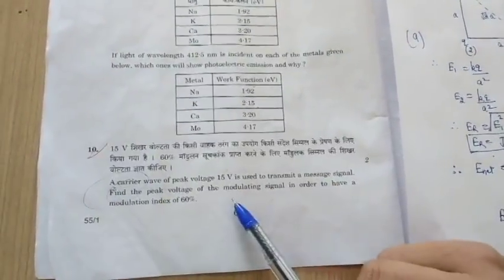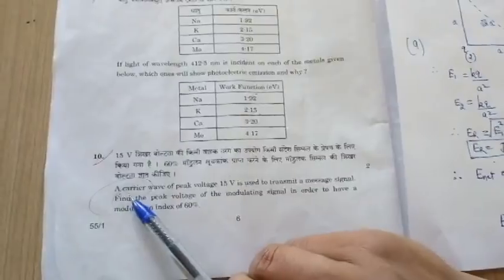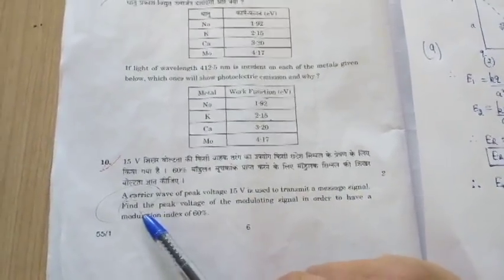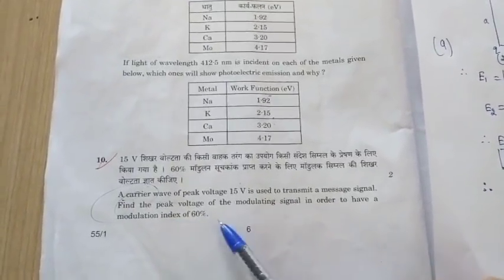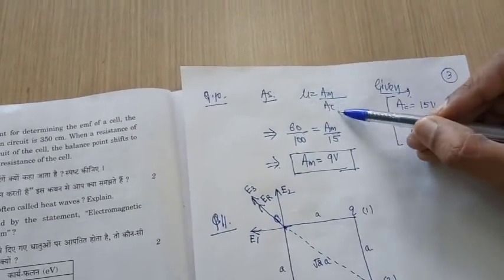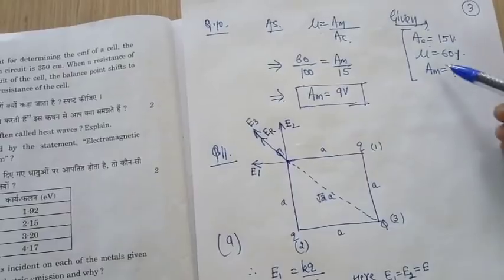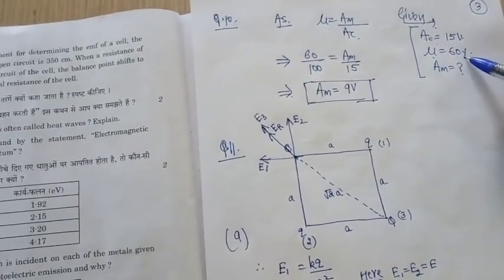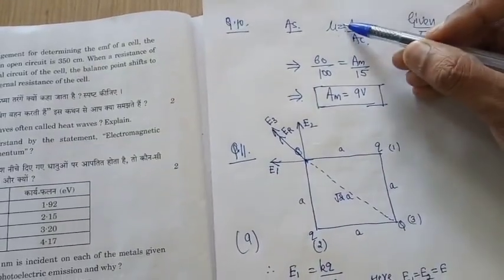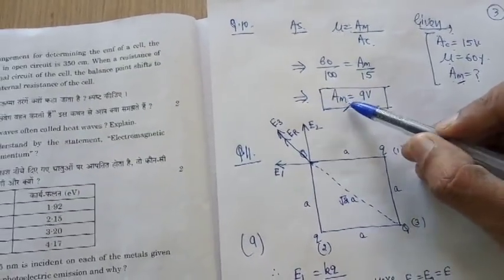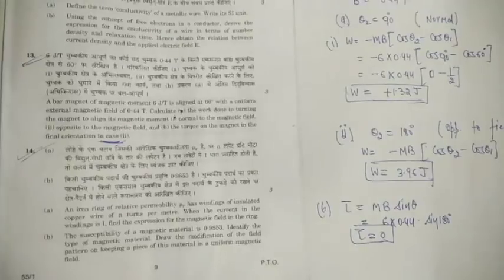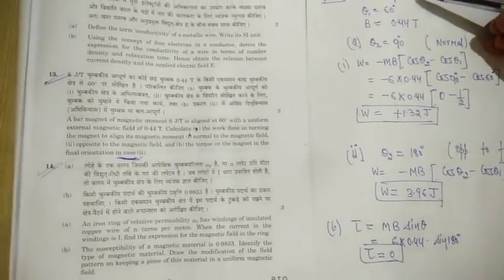Question 10: a carrier wave of peak voltage 15 V is used to transmit a message signal with a modulation index of 60%. Find the peak voltage of the modulating signal. Using the relation μ = Am/Ac, where Ac = 15 V and μ = 0.60, solving gives the peak voltage of the modulating signal as 9 volts.